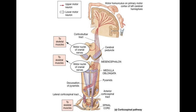There is sometimes confusion about the nomenclature of these tracts — people think they are called pyramidal because some fibers originate from the pyramidal cells or Betz cells in layer 5 of the cortex. But that is not the case. They are called pyramidal because they decussate and form a pyramidal elevation in the medulla. Around 3–5% take origin from the Betz cells, and around 95% take origin from other parts of the precentral gyrus.